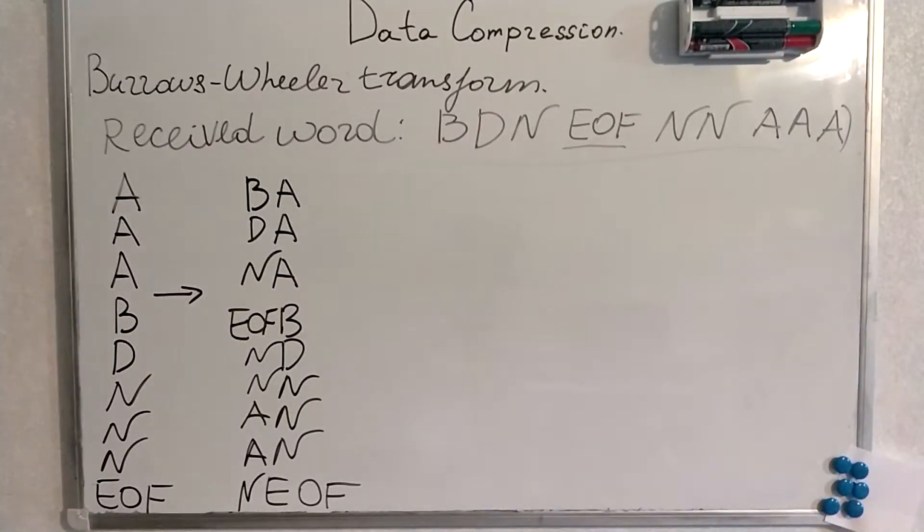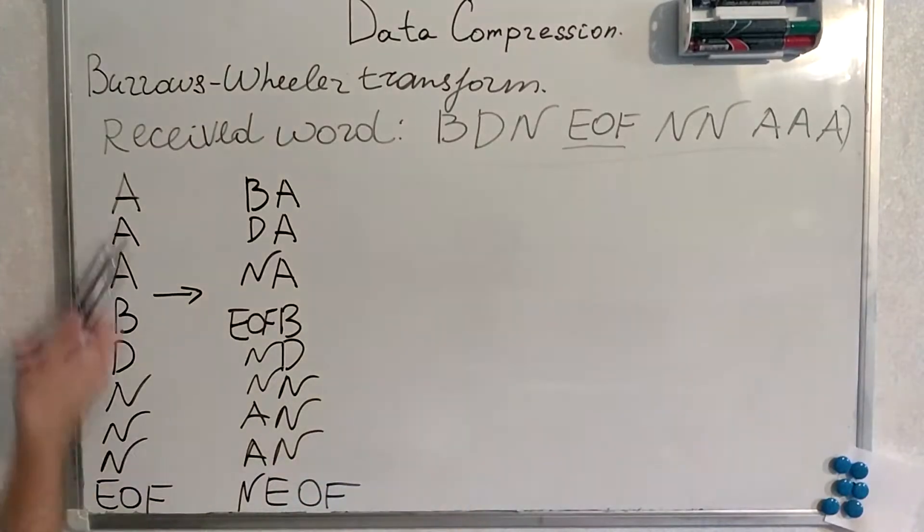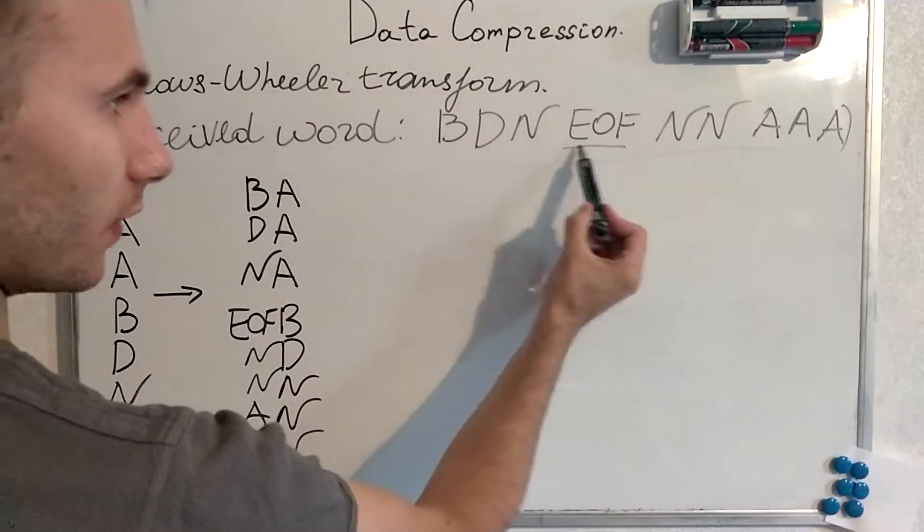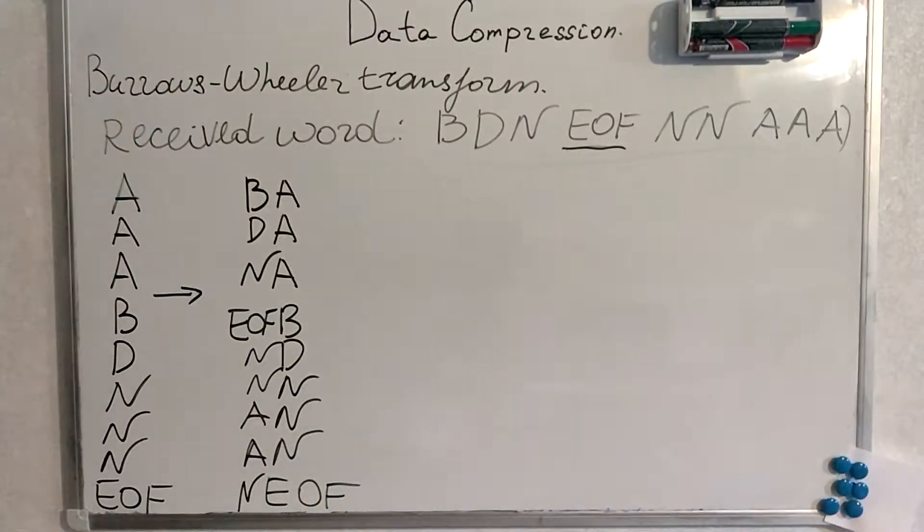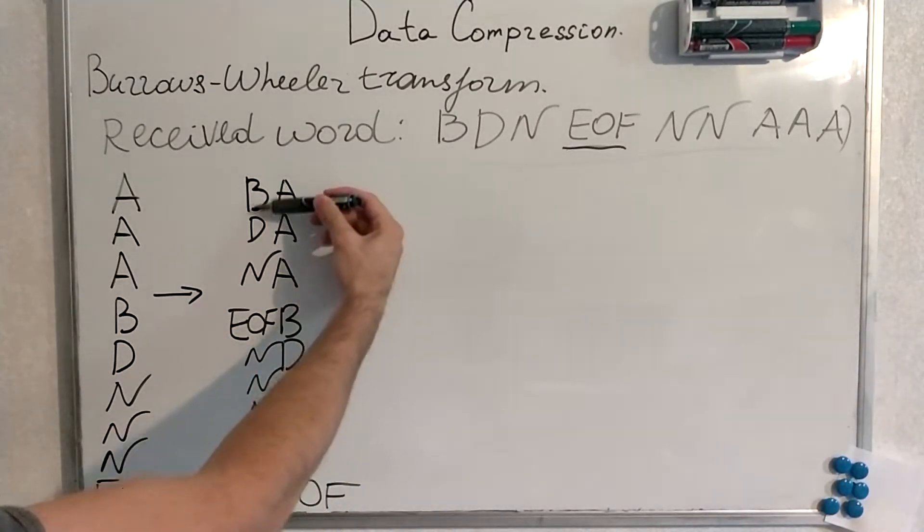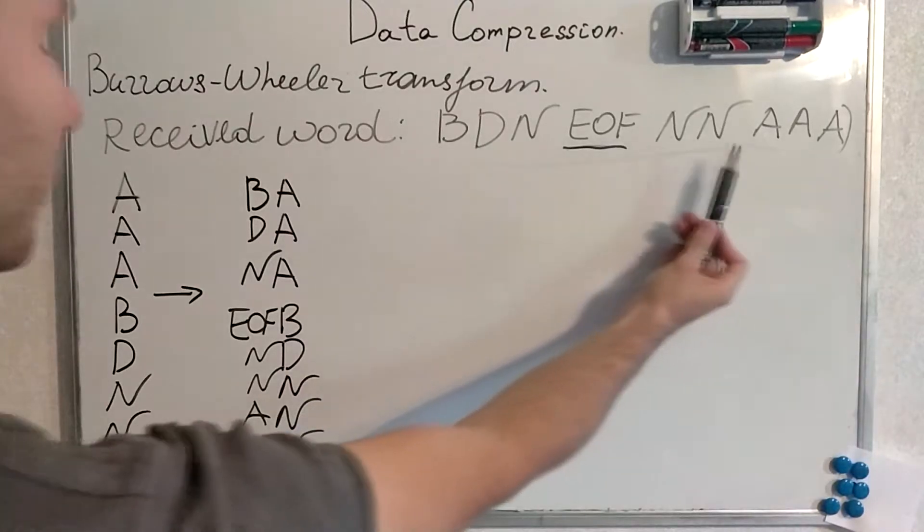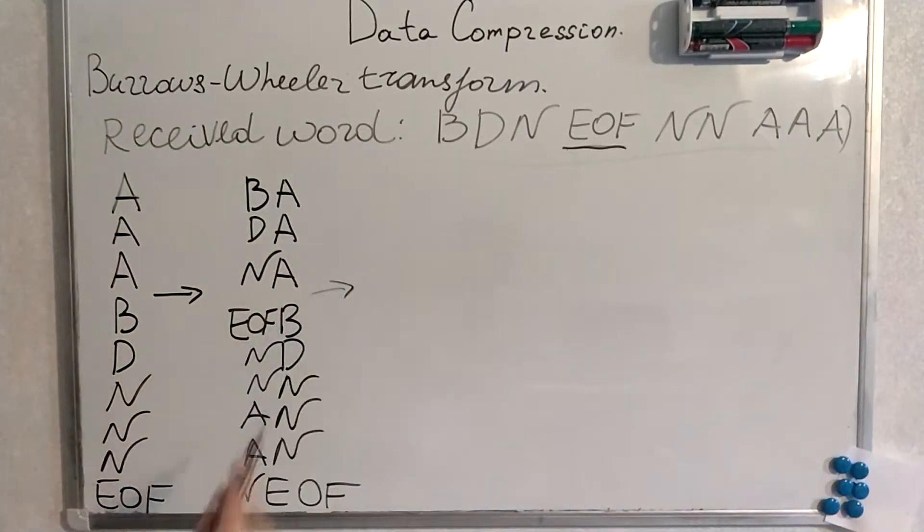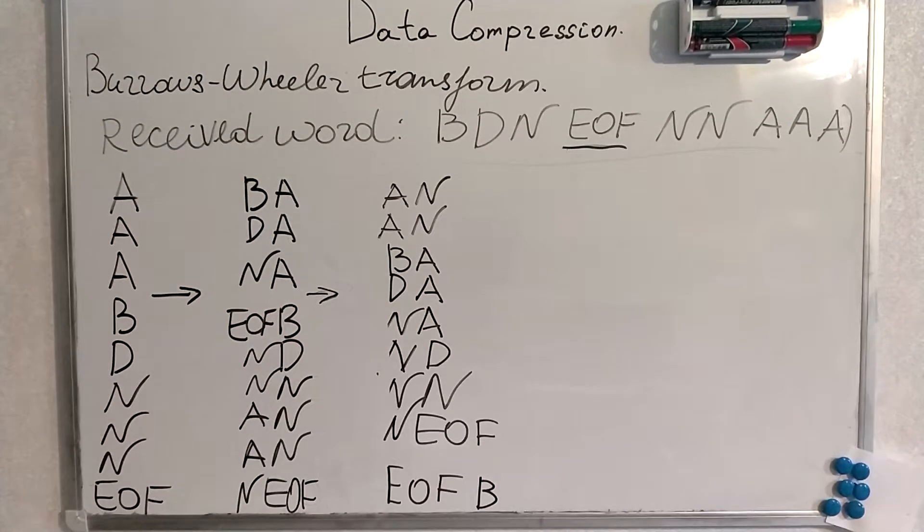Here we sort our received sequence. We have sorted the symbols. This symbol means end of file. It is in lexicographical order. Here is the last one. Now to the sorted sequence we add our sequence we have and we will sort it once again. We have sorted the symbols.